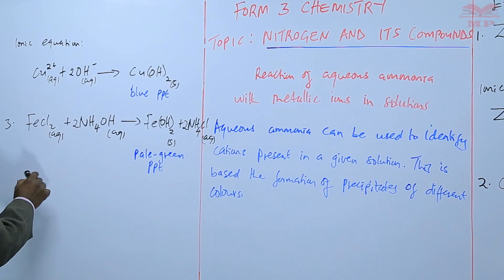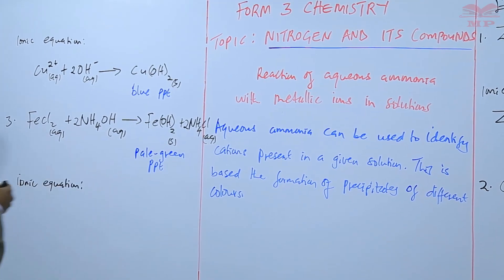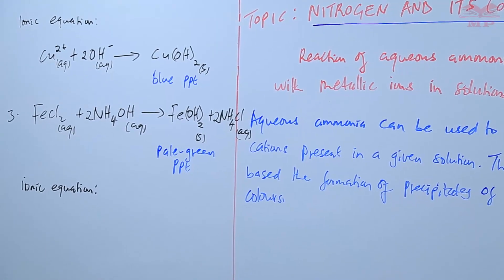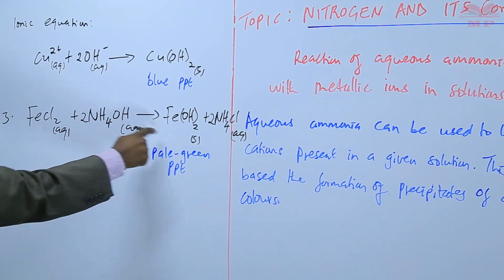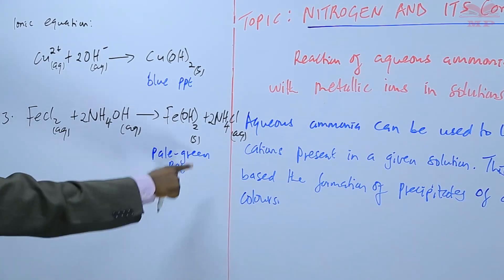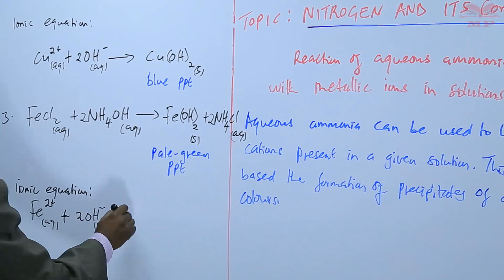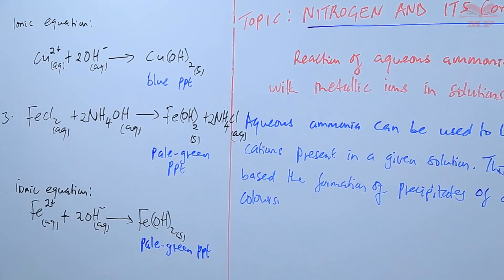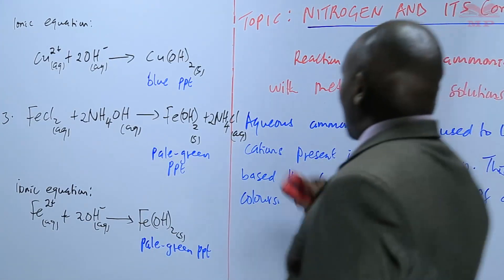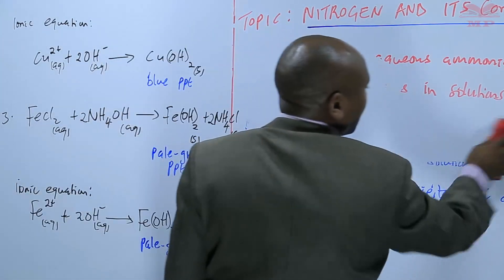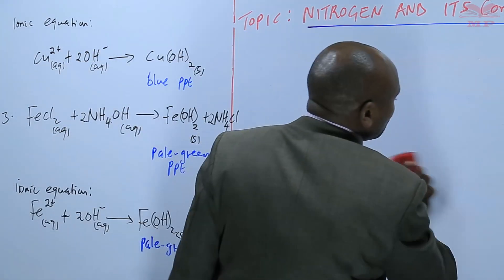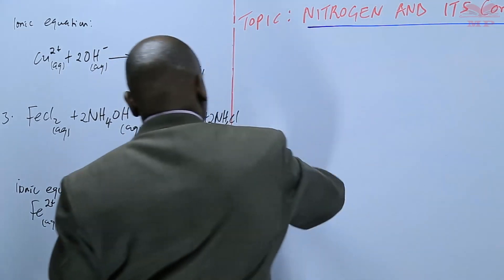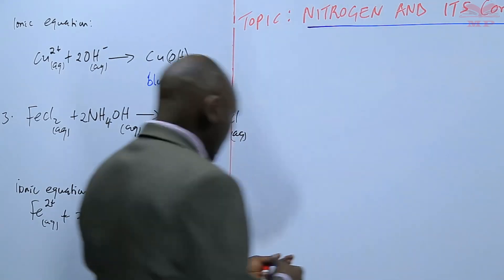The ionic equation shows that iron(II) ions combine with the hydroxide ions — the hydroxide ions coming from aqueous ammonia — to form iron(II) hydroxide, which is a pale green precipitate. We have now seen three equations showing that aqueous ammonia can be used to identify the cations present in a given solution.